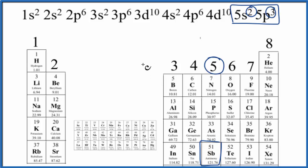If we wanted to write the Lewis structure for antimony, we'd write Sb, and then we'd put five valence electrons around it.